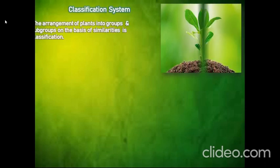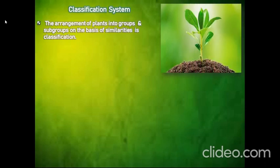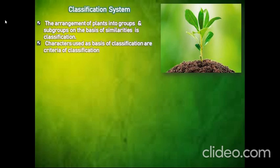We will start from Classification System. It is the arrangement of plants into groups and subgroups on the basis of similarities. The characters used as basis of classification are the criteria of classification.